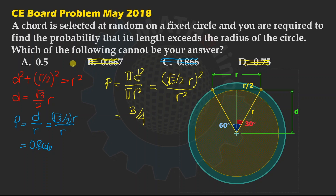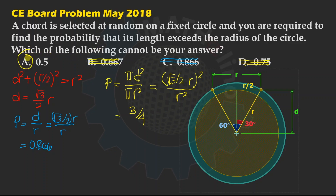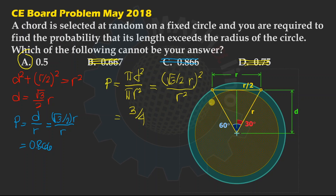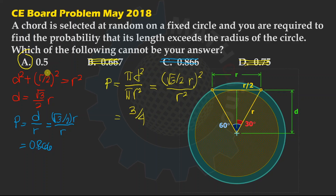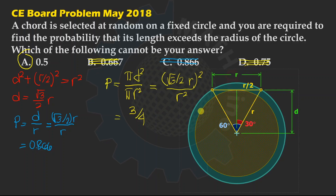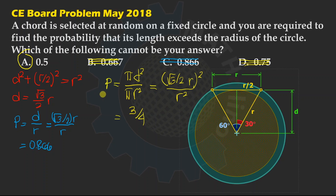The required answer is: which of the following cannot be the answer to this probability? Letter A: 0.5. What if you could find a way to describe the chord so that it comes up as a probability of 0.5? There is a big chance you can find that definition of a chord, but in the premise of geometry, I think we cannot find a definition of a chord that will come up to 0.5. If you can, please comment below. Thank you for watching, have a good day. See you in our next video. Bye-bye!